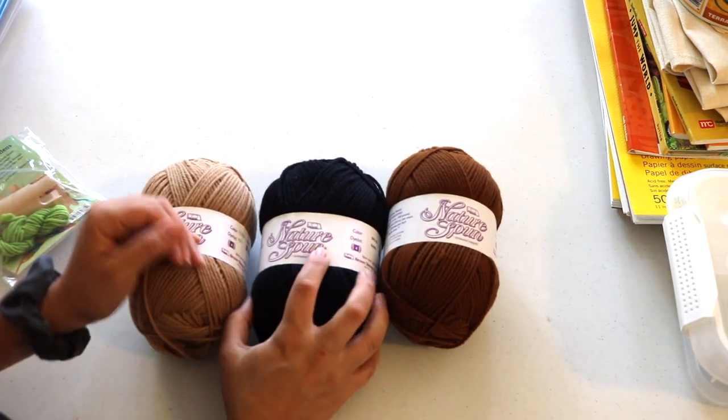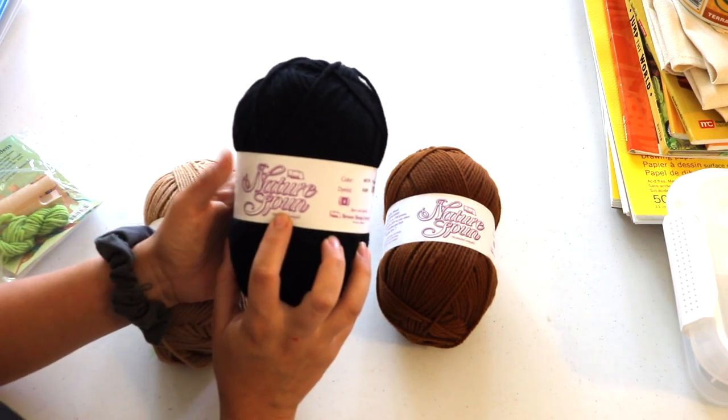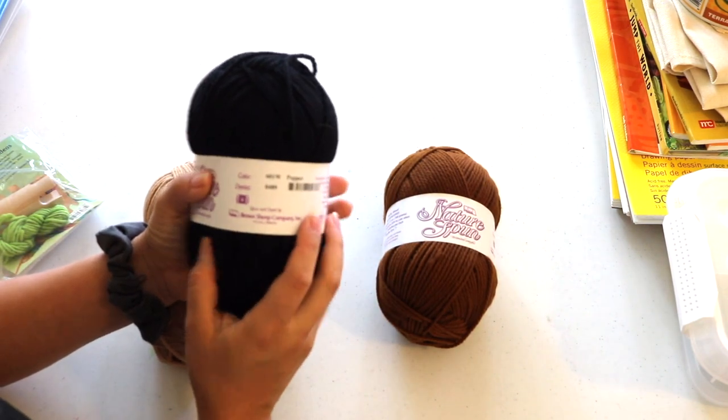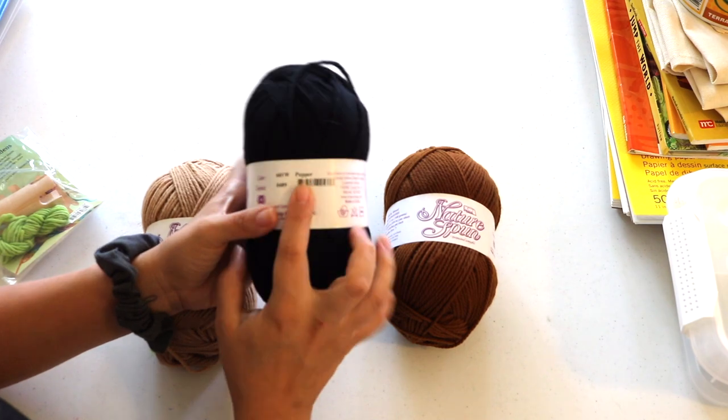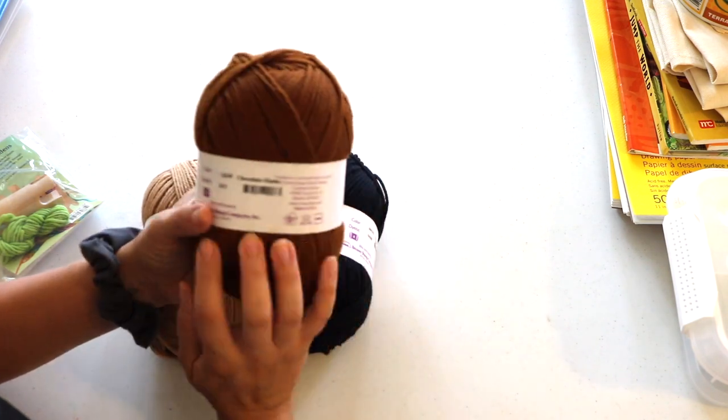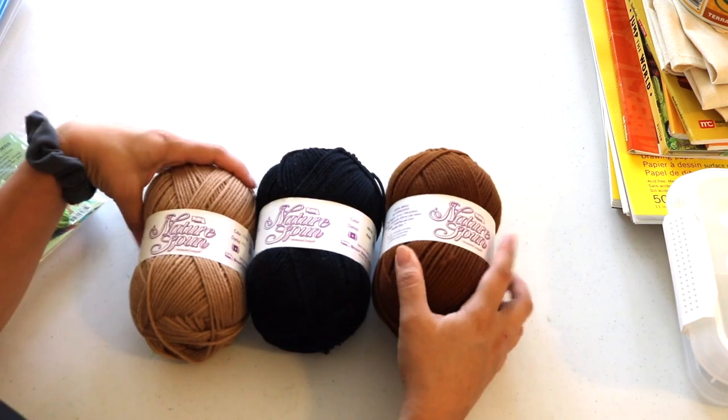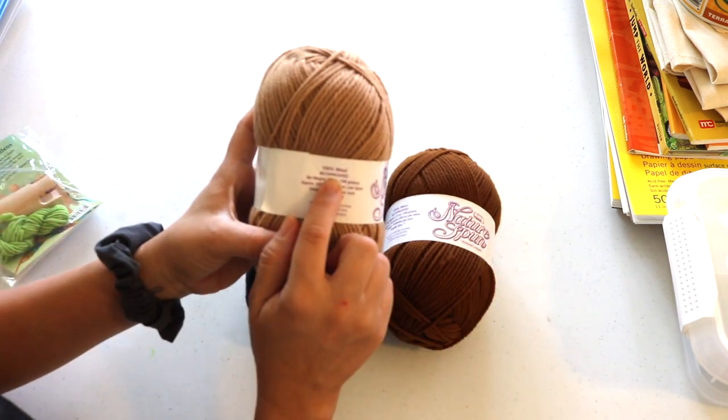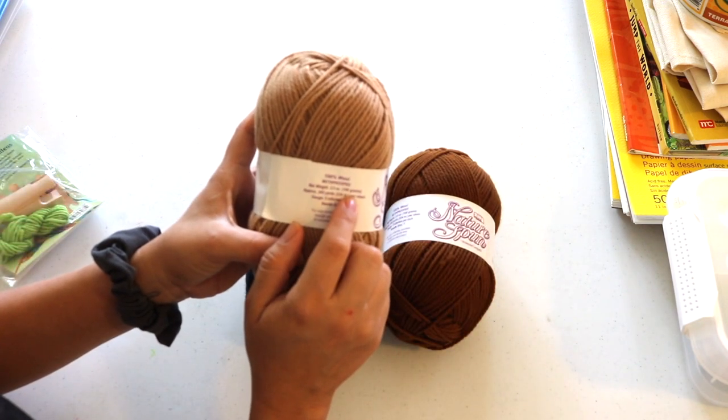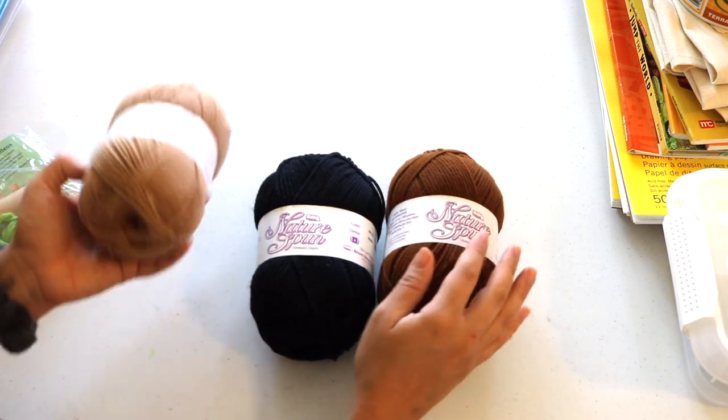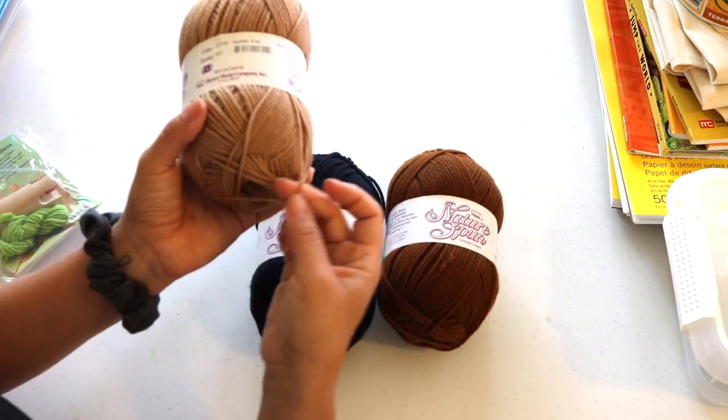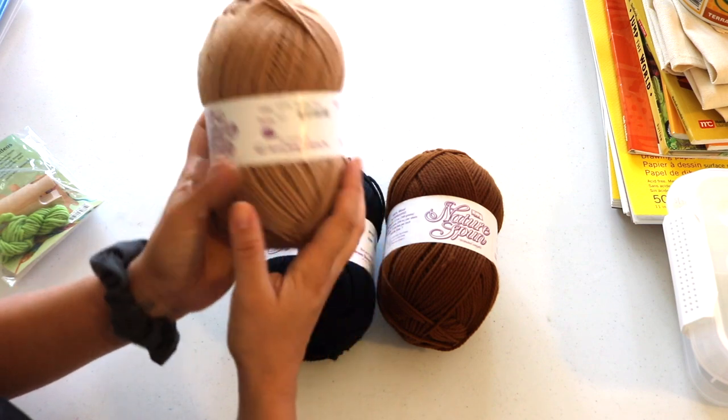I also picked up three of the Nature Spun wool yarn in worsted weight in the colors pepper, chocolate kisses, and the lightest brown is in saddle tan. This is for additional hair for the peg dolls, just in case the wool that is included in the kit is not enough.